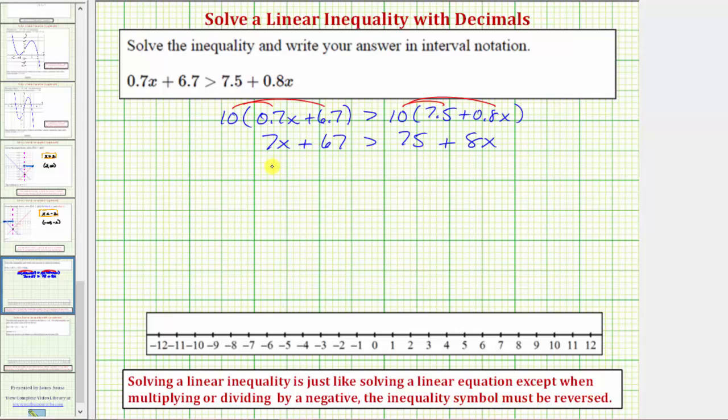So let's get the x terms on one side by subtracting 8x on both sides. Simplifying, this would be zero. So we have negative x plus 67 greater than 75.